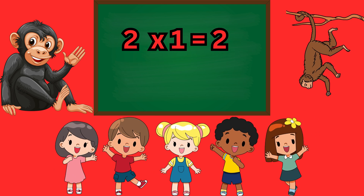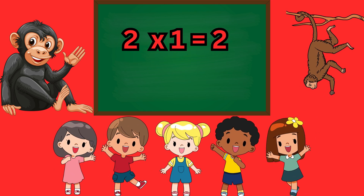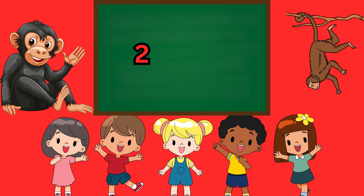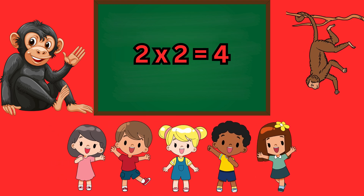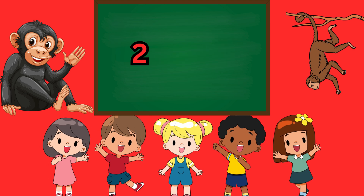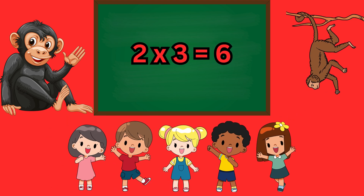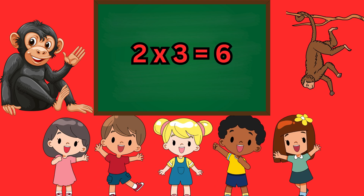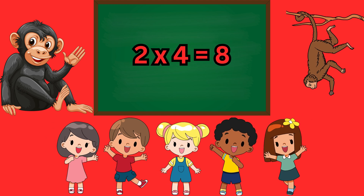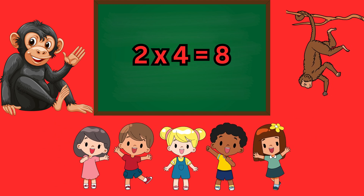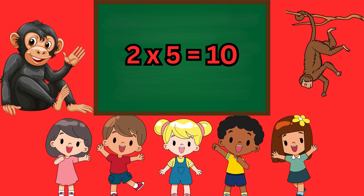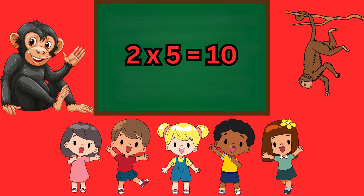Two ones are two, two twos are four, two threes are six, two fours are eight, two fives are ten.